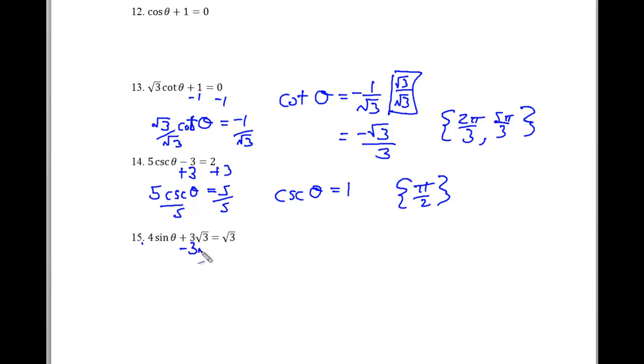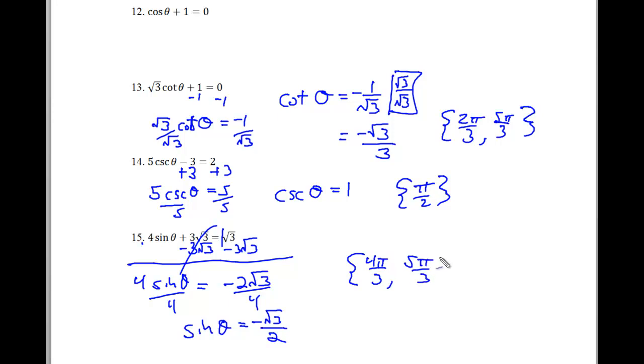In problem number 15, we're going to subtract the 3 square root of 3 from both sides. A common mistake is not simplifying. When I have 1 square root of 3 minus 3 square root of 3, I've got negative 2 square root of 3, and this is equal to 4 sine of theta. Divide both sides by 4. Sine of theta is equal to negative square root of 3 over 2, because this is simplifiable to 1 half. So now I look at my unit circle, and I see that that happens at 4 pi over 3, and it happens at 5 pi over 3. It doesn't happen again until I take another spin around the circle, but since we're looking between 0 and 2 pi, these are our two answers for when this is the case for theta.